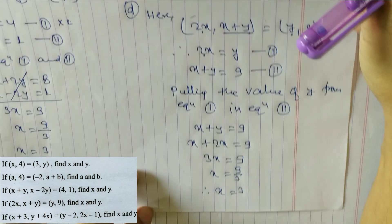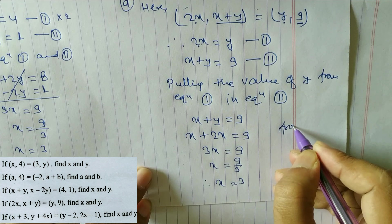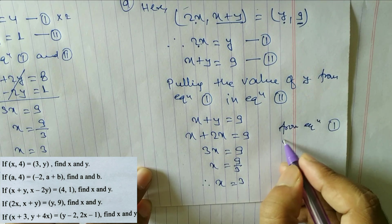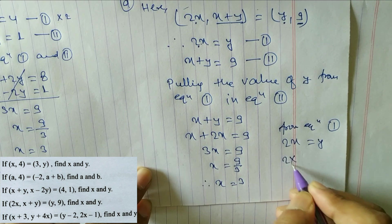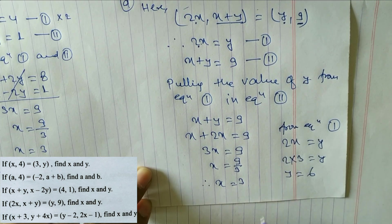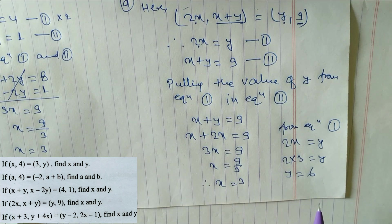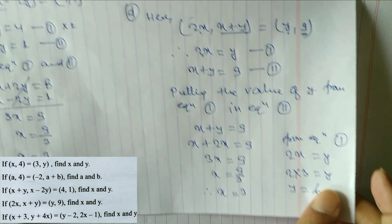Now find y from equation 1: y is equal to 2x, so y is equal to 2 times 3, giving y is equal to 6. So x is equal to 3 and y is equal to 6 for question d.